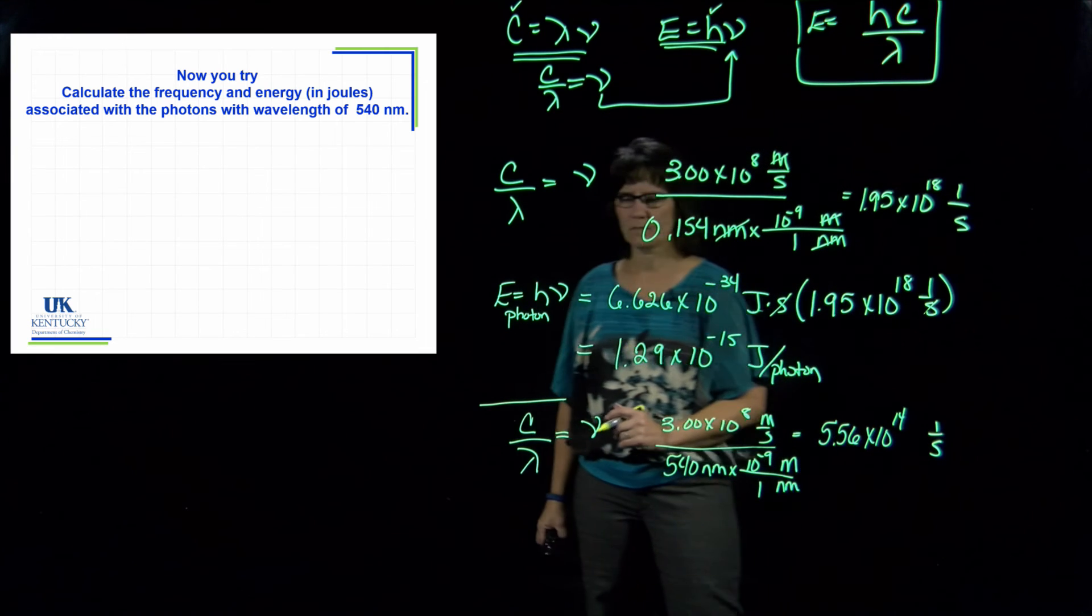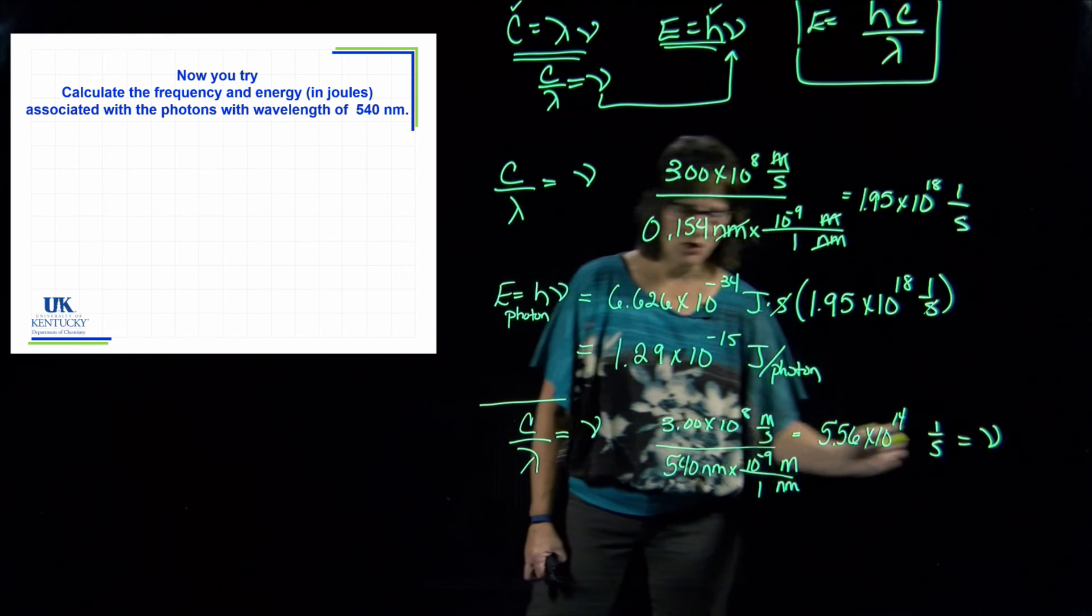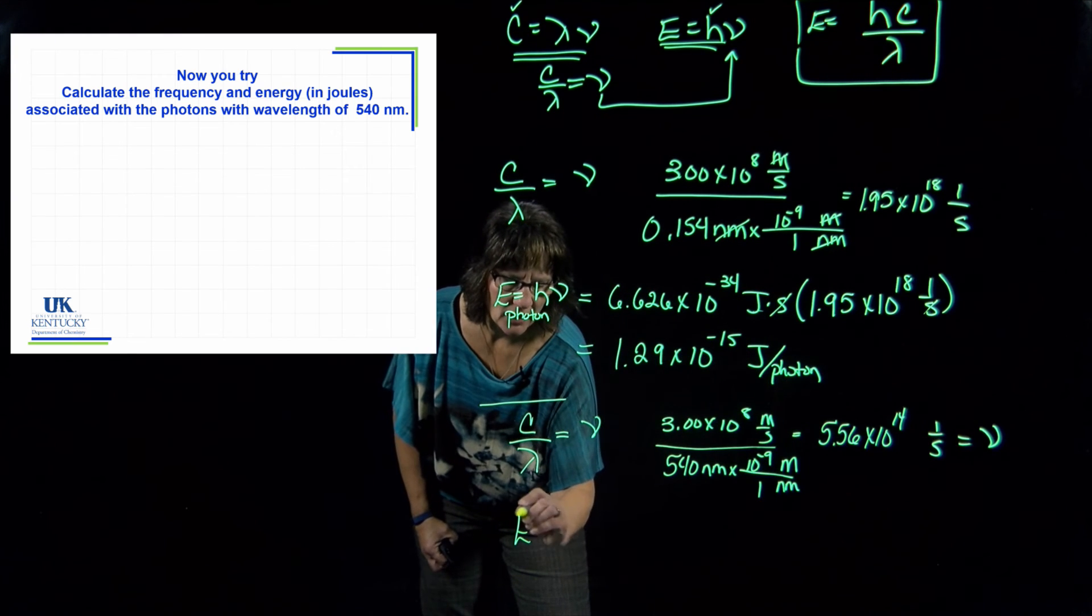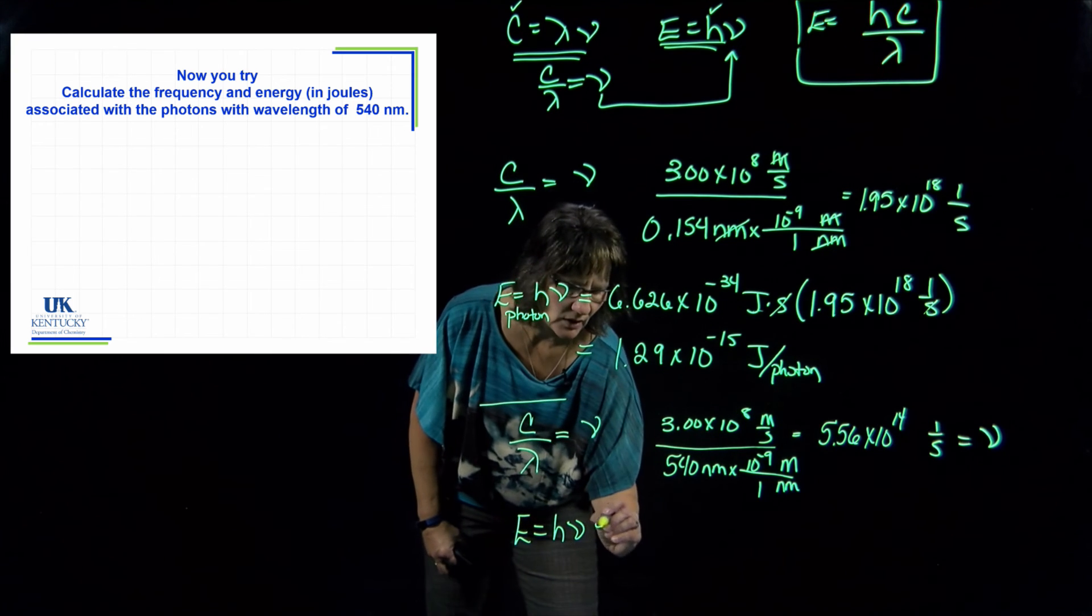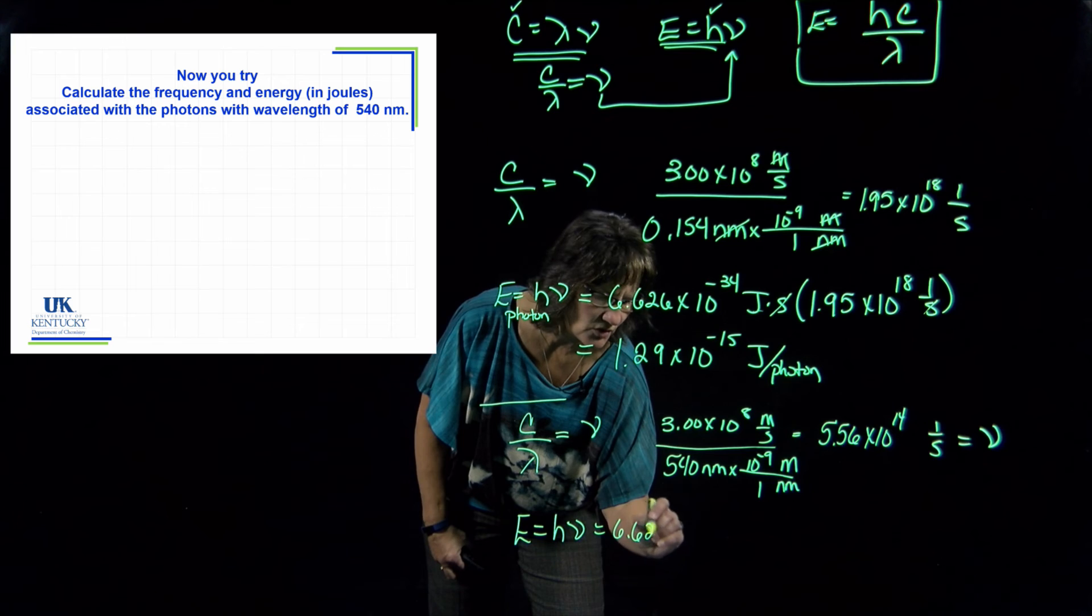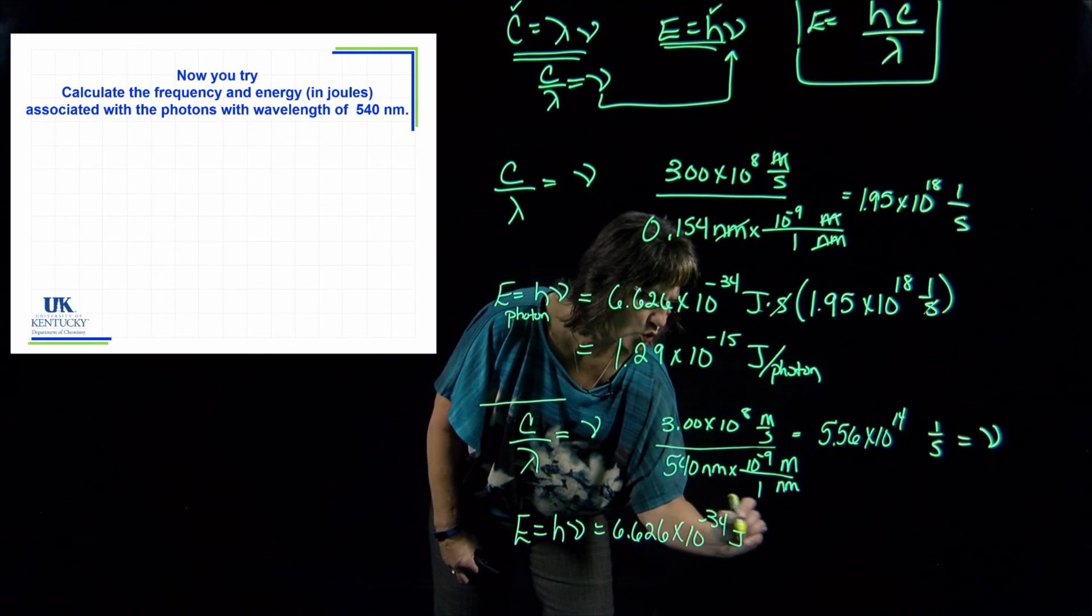And now once we know the frequency, which is what that is, we get the energy: energy equals h times nu. H times frequency: 6.626 times 10 to the minus 34 joules times seconds times this value that we have here, 5.56 times 10 to the 14th, one over seconds.